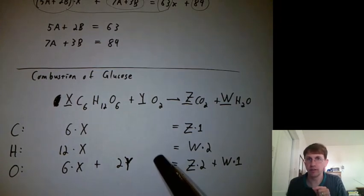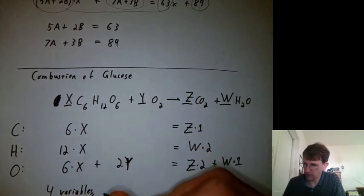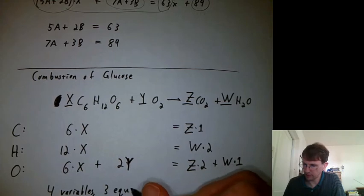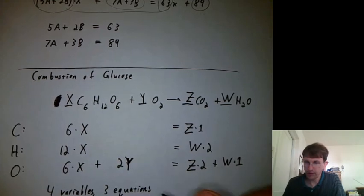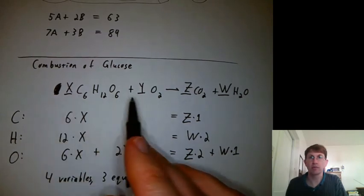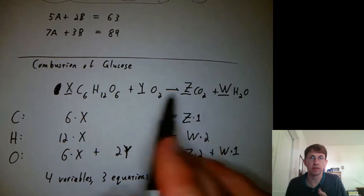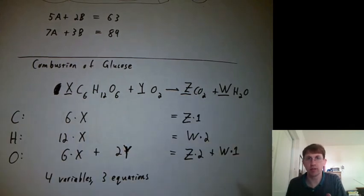There's a little wrinkle though. Notice that this has four variables, but only three equations. That means that there's multiple solutions. If you find an X, Y, Z, and W that balance this, multiplying them all by two will still balance it. You'll just have twice as much on each side.